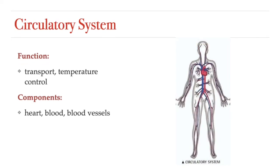The circulatory system, also sometimes called the cardiovascular system, is composed of a network of vessels that move blood throughout the body. The blood can transport nutrients, gases, waste, and important molecules like hormones. The heart is the pump that keeps the blood moving throughout the body. The circulatory system also plays a role in regulating our body temperature by redirecting blood to different parts of our body depending on whether we are hot or cold.